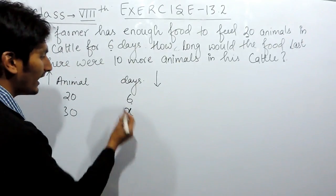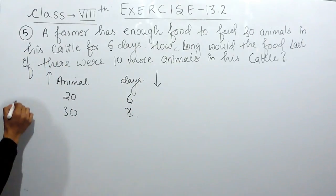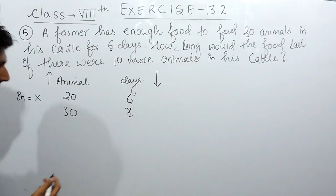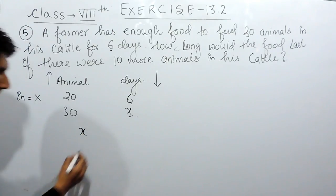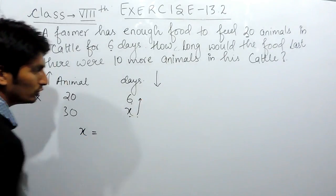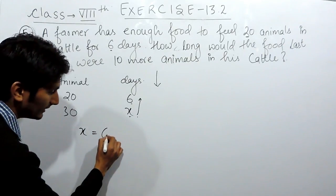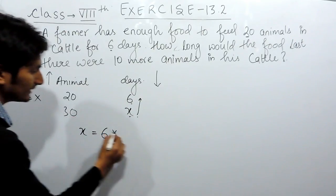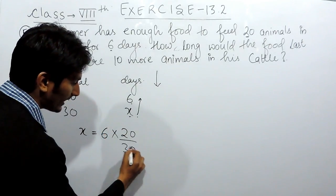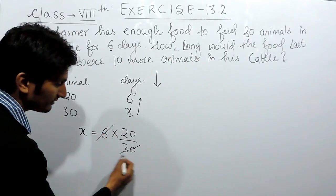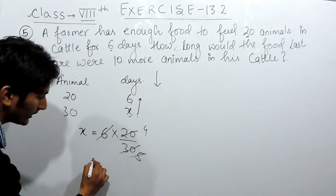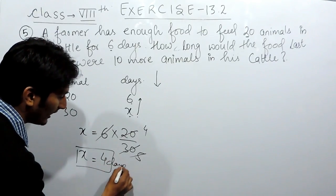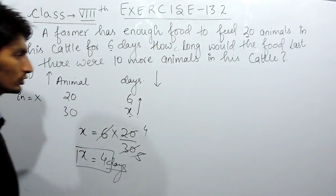So this is inverse proportion. When there is inverse proportion, you have to multiply. Writing x here, because this is inverse proportion, I multiply: 20 times 6 equals 30 times x. The 30 can be cancelled — 6 divided by 30 simplifies, giving x equals 4 days. So this food will last for four days. This is the first method.